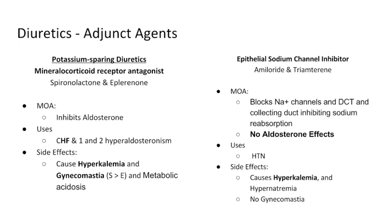By doing that, we cause diuresis — more sodium in the nephron creates an osmotic effect, drawing more water into the nephron. These are primarily used for heart failure and for primary and secondary hyperaldosteronism. In hyperaldosteronism, obviously, we want to block the effects of aldosterone being secreted endogenously.